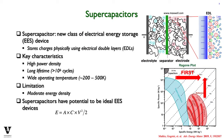Supercapacitors are energy storage devices that, like regular capacitors, consist of two electrodes and an electrolyte, as shown in the schematic in the top right-hand corner of this slide. Supercapacitors have electrodes that are nanoporous to increase the surface area for ion absorption and thus increase the energy stored by orders of magnitude. Charges are stored by physical absorption into electrical double layers within the electrodes, so supercapacitors are also called electrical double-layer capacitors, or EDL capacitors.